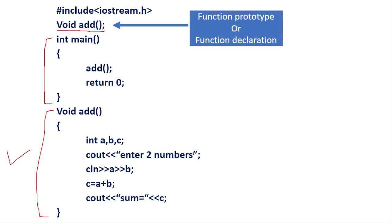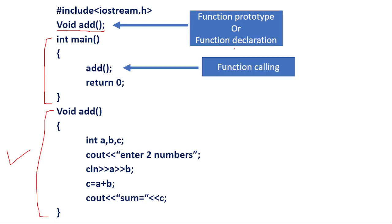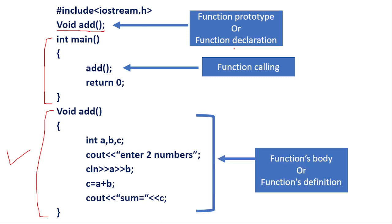What does this line mean? This line is the function prototype. The function prototype tells the compiler that after the main body there is one more module — the add module. If you are creating the function body after main, you have to specify that module before the main program. That line is known as function prototype or function declaration. After that you create the main function in which we are calling the function body, but we are creating the function body at the last. This is the second method.